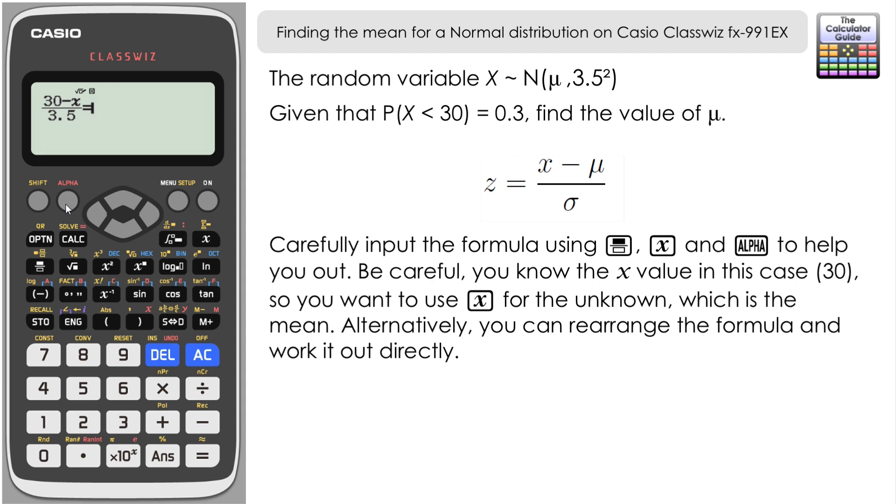And then we want our z value. So that was stored in A. So it's alpha A to recall that and use it as part of our calculation here.